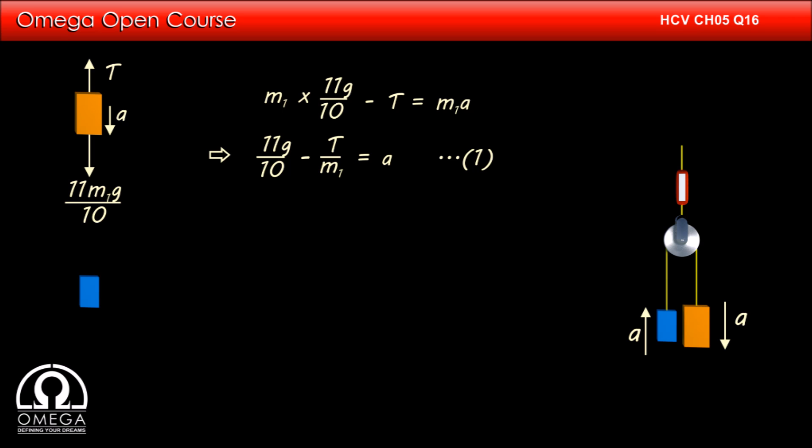If we denote the mass of 1.5 kg block with M2, gravitational force of M2 into 11g by 10 is pulling the block downward. Tension T is pulling it upward and the block is moving upward with acceleration A. Writing equation of motion in vertical direction, we get T minus M2 into 11g by 10 equals M2A. Dividing both sides by M2, we get T by M2 minus 11g by 10 equals A.